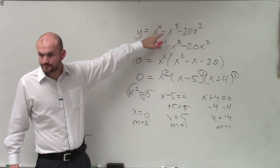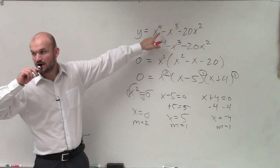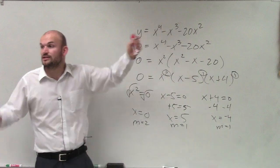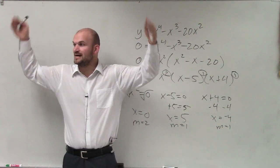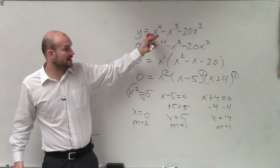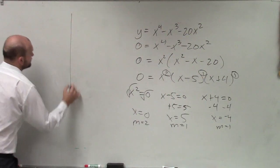What is the end behavior? Since the degree is even and the leading coefficient is positive, both ends of the graph go up - both positive.